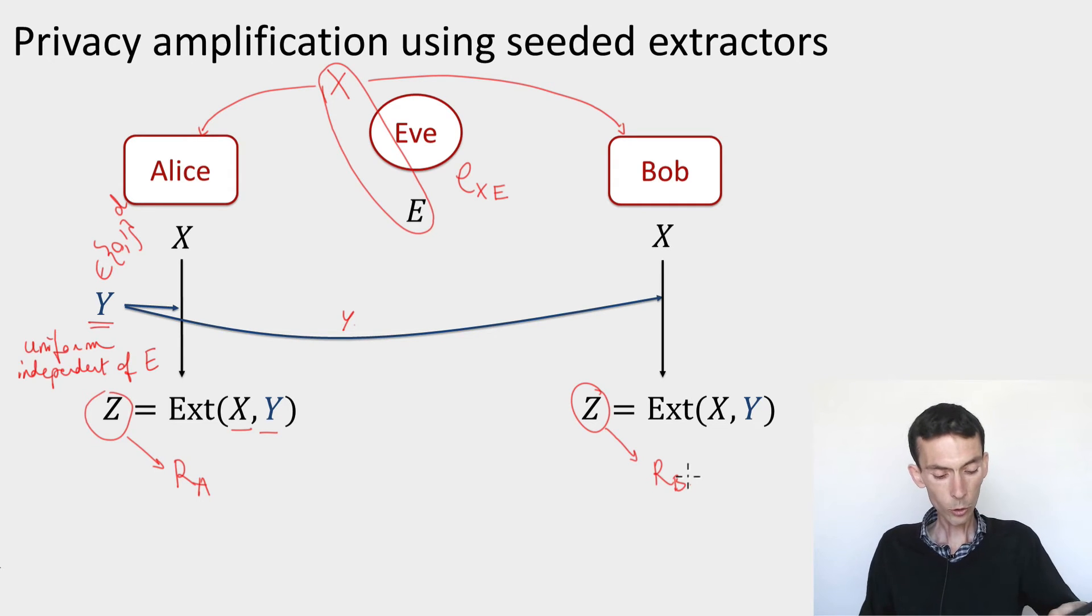So in this way, we get a privacy amplification protocol, which is always going to be correct. So it's correct with parameter zero. So zero error in terms of the correctness. And now the security.